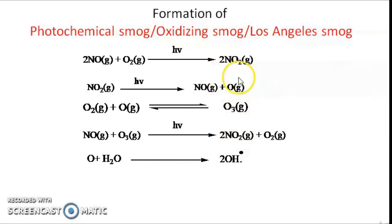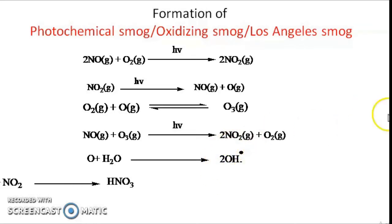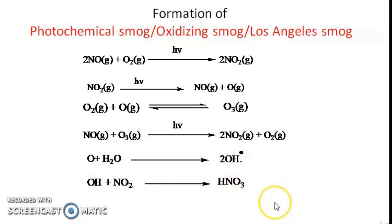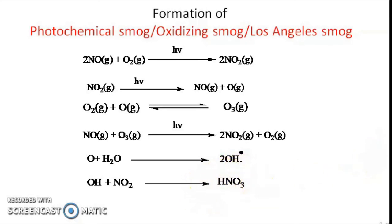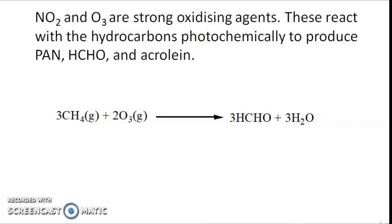The atomic oxygen can also react with water molecules to form hydroxyl free radicals (OH·). This OH free radical is highly reactive and reacts with NO2 to form HNO3 (nitric acid), which precipitates as acid rain. In classical smog it is sulfuric acid that contributes to acid rain, while in photochemical smog it is nitric acid. So both photochemical smog and classical smog result in acid rain.